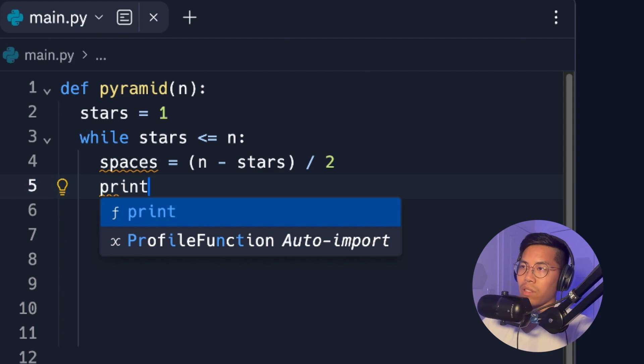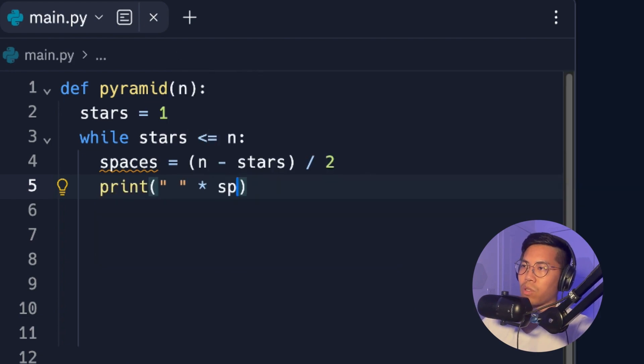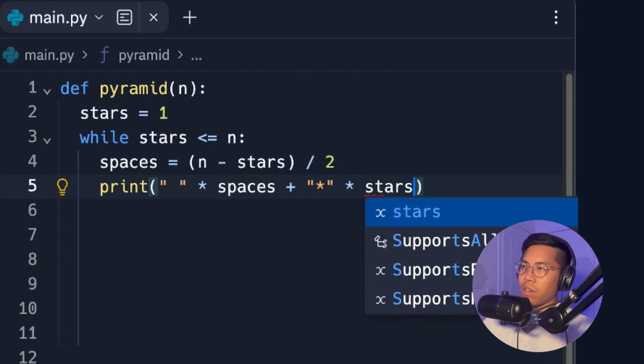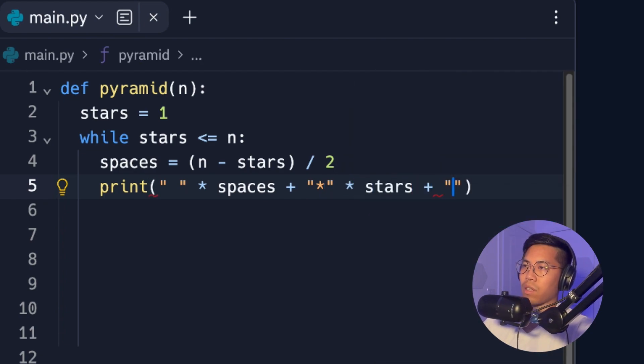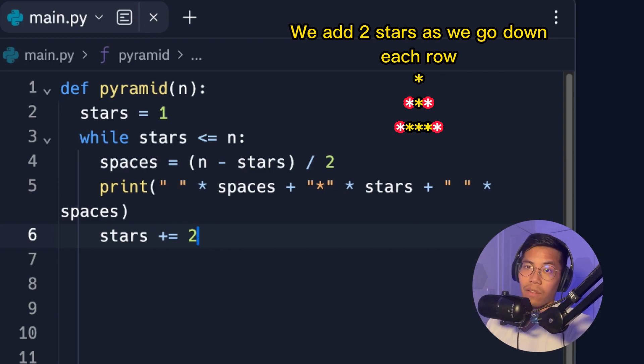And now we can print space character multiplied by spaces plus star character multiplied by stars and then plus space character multiplied by spaces. Then after the statement, all we have to do is add two more stars for the next level.